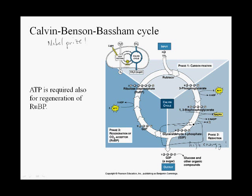This figure also shows you the back end of the cycle. To understand the back end, we need to understand how we can actually liberate or generate a molecule of glyceraldehyde 3-phosphate that can then leave the cycle and do other things in the cell.